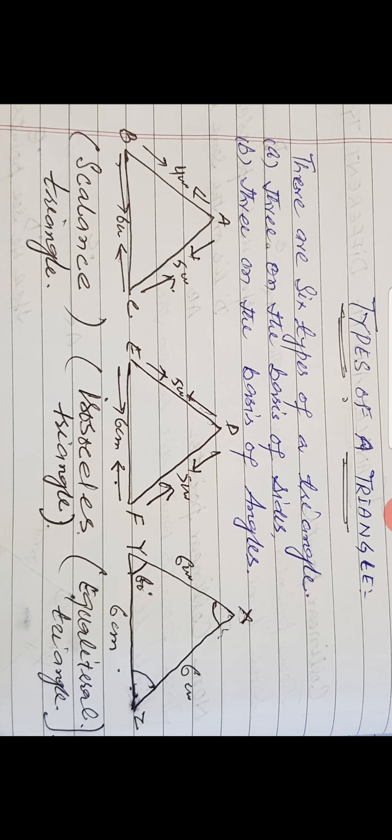In triangle ABC, all sides are different in length — four, six and five centimeters. A triangle which has all sides different in length is called a scalene triangle. In triangle DEF, two sides are equal in length — five centimeters and five centimeters. A triangle which has two sides equal in length is called an isosceles triangle.